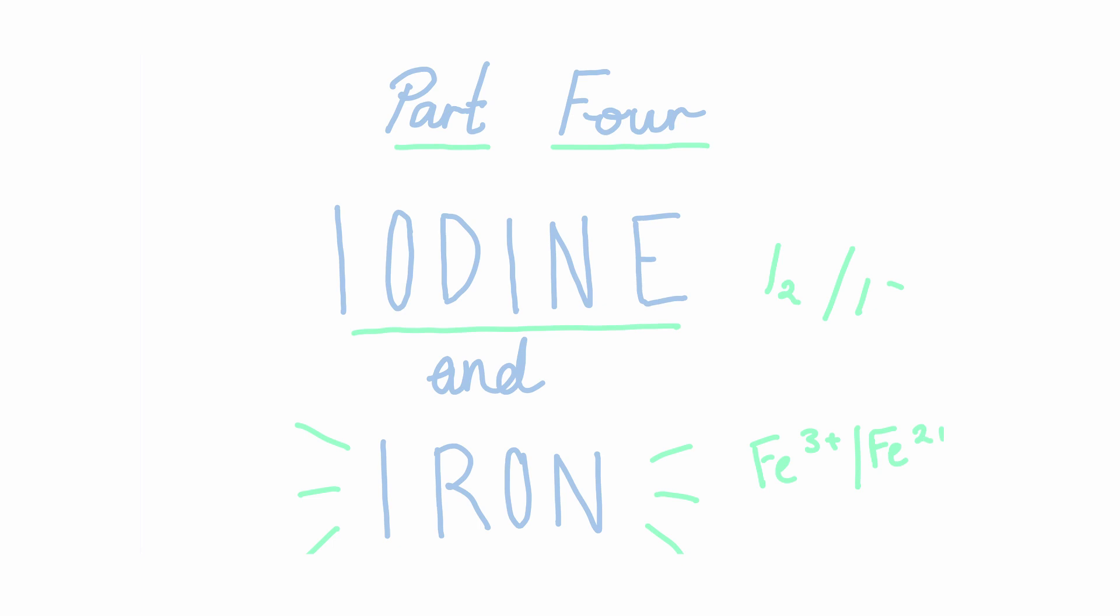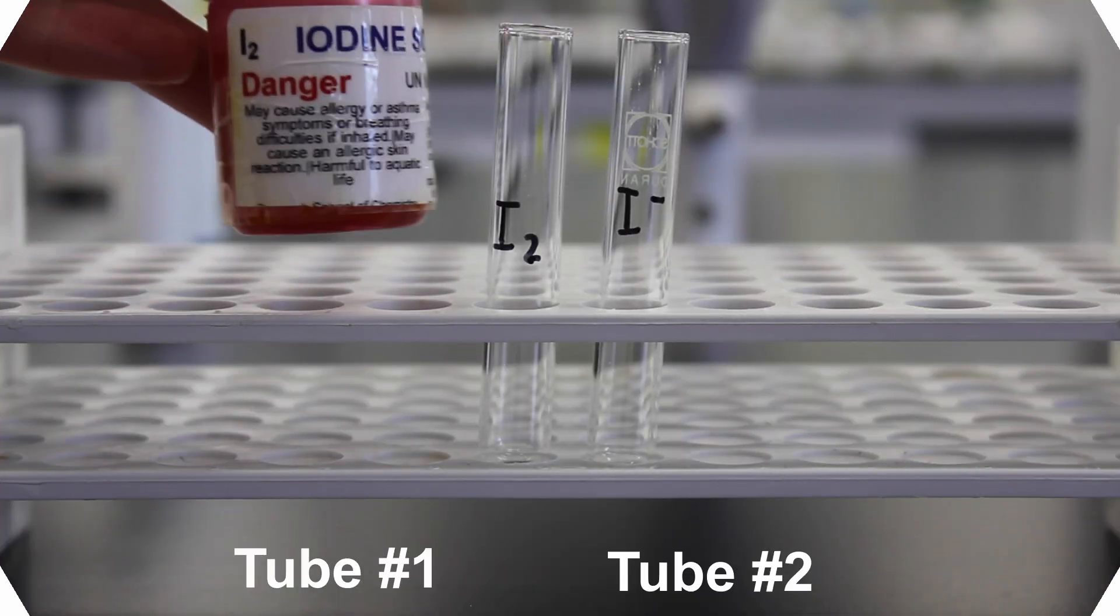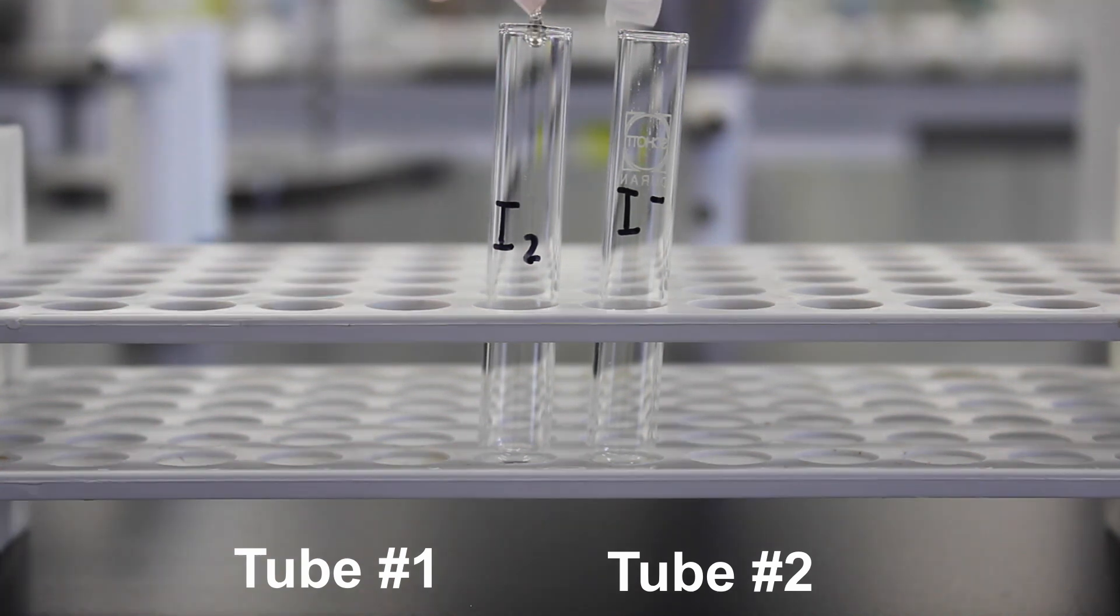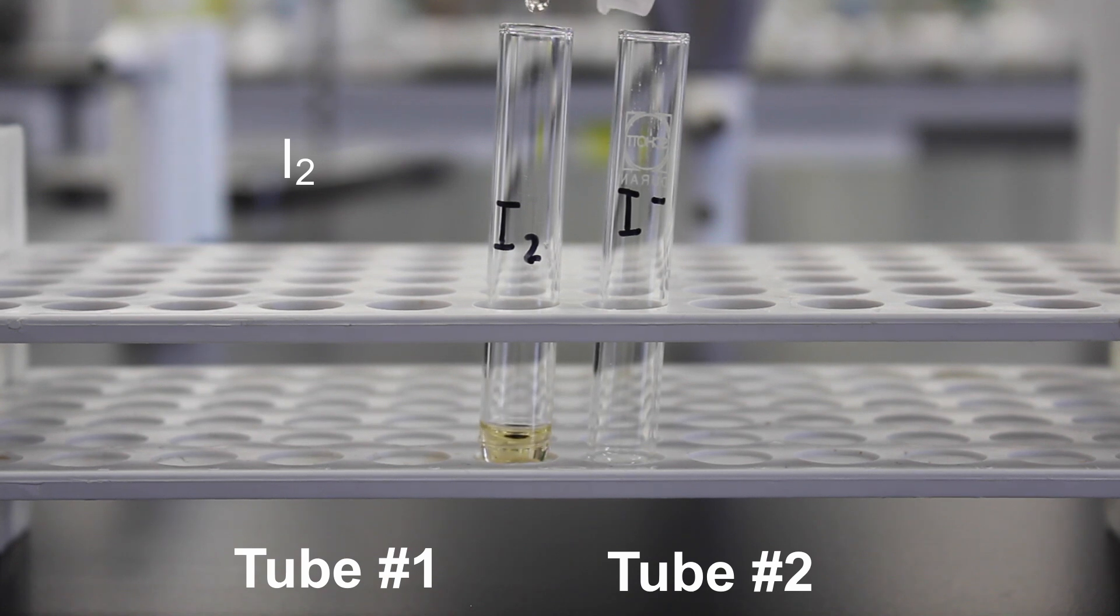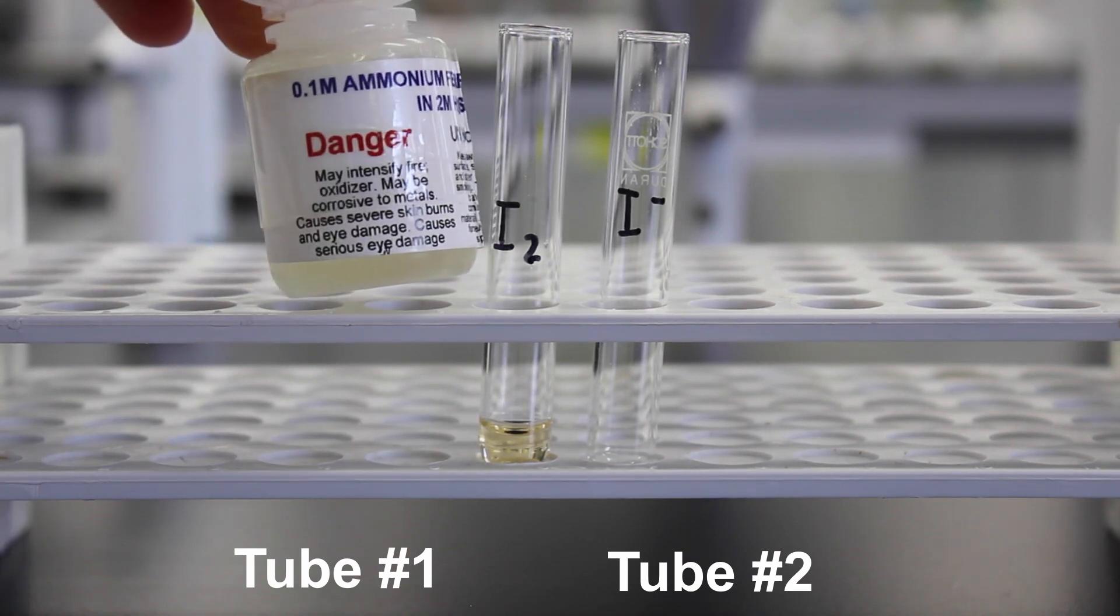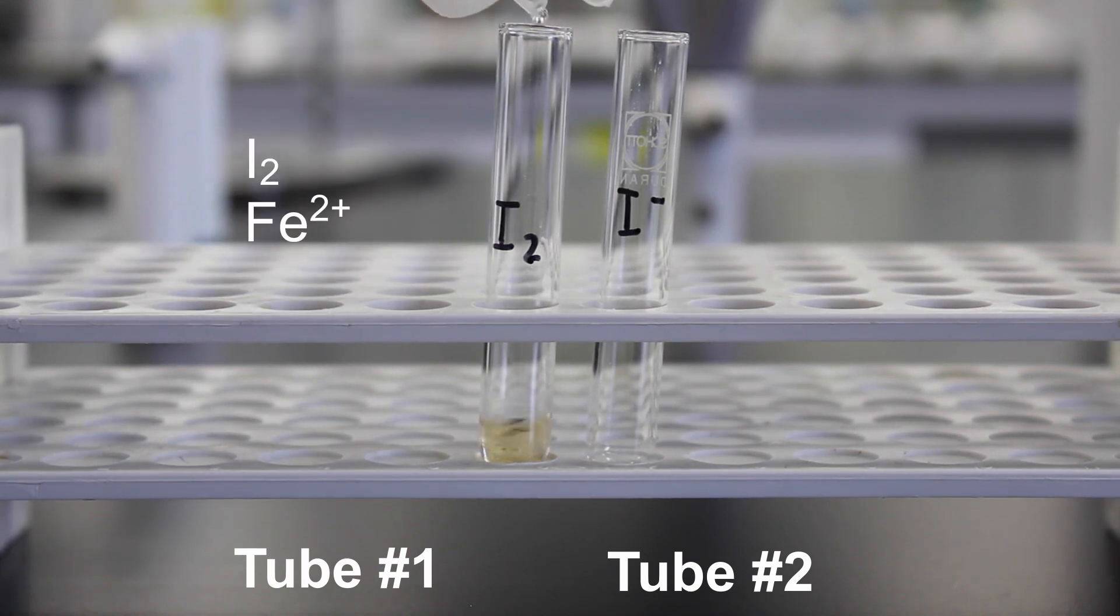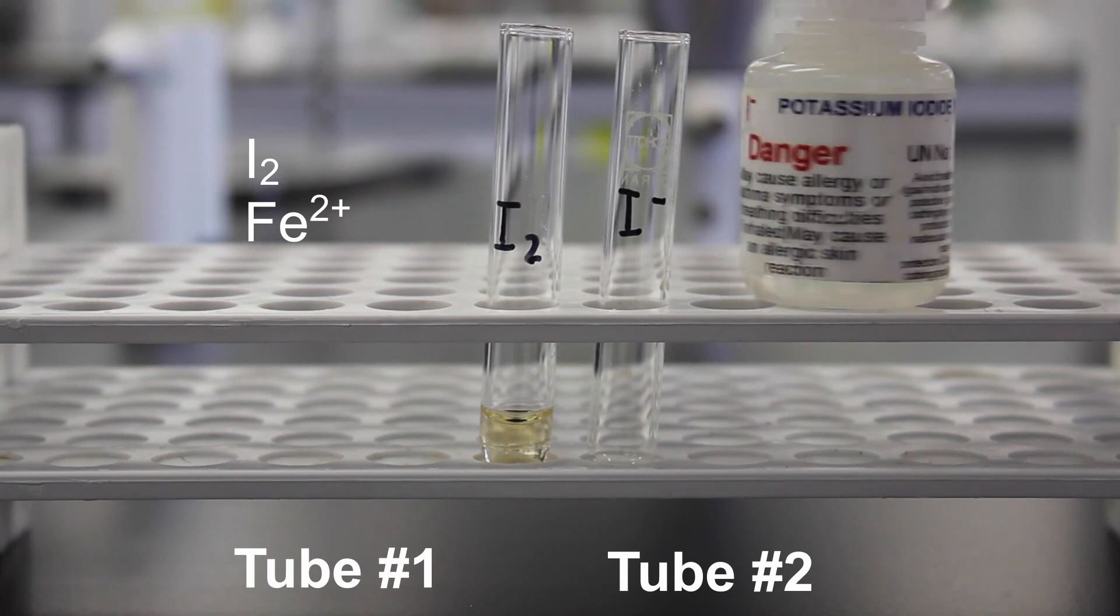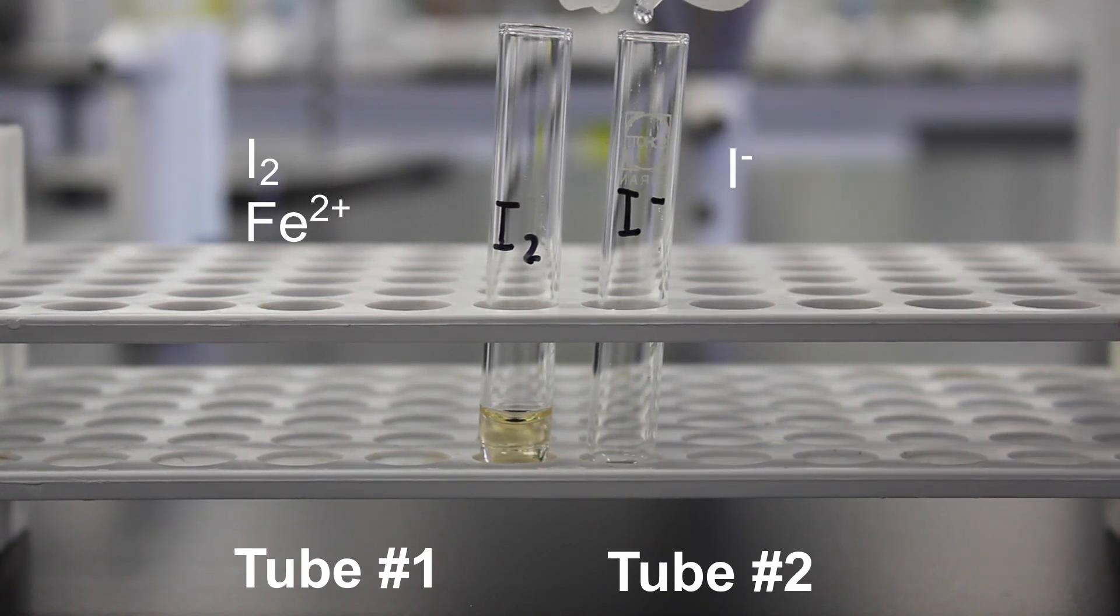In part 4, we'll compare the electrochemical couples of iodine and iron. To your first test tube, add your free iodine solution, I2. Now we'll add iron 2+. To the second test tube, add your iodide ions. Follow this with a few drops of iron 3+.